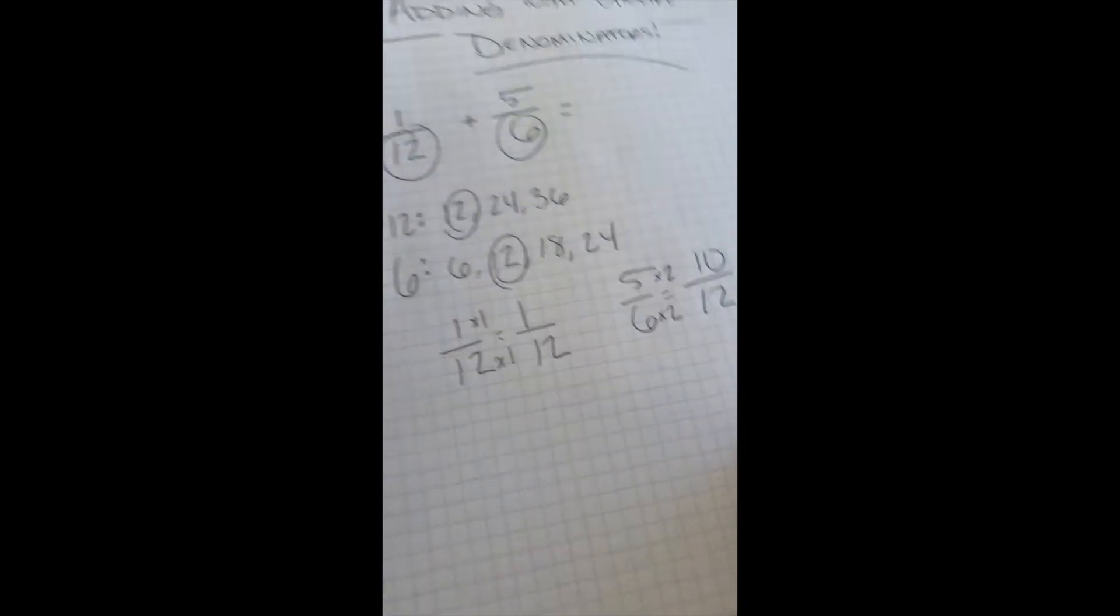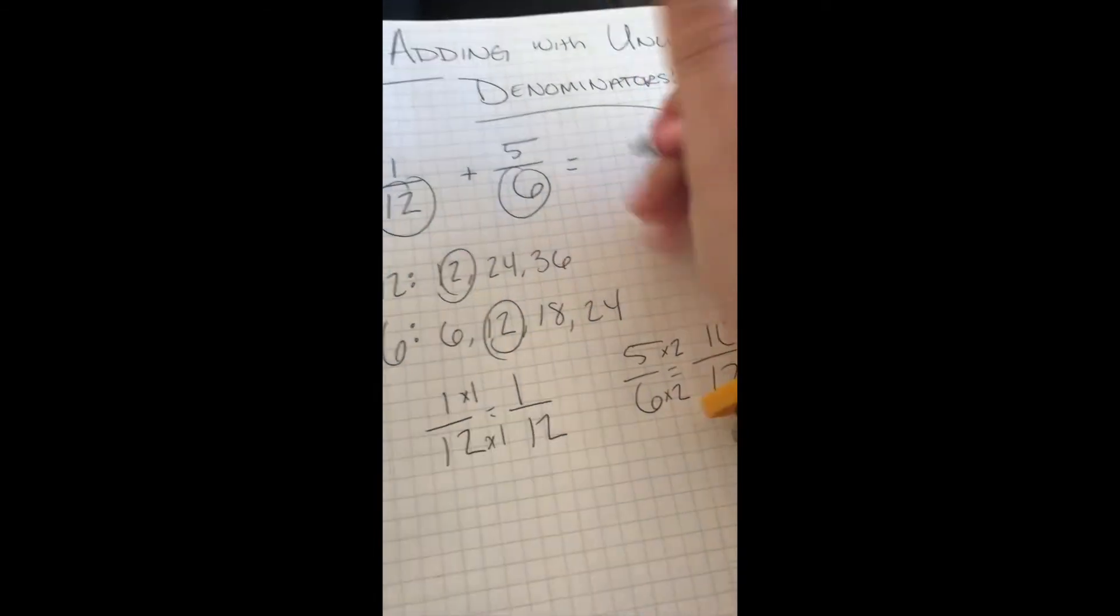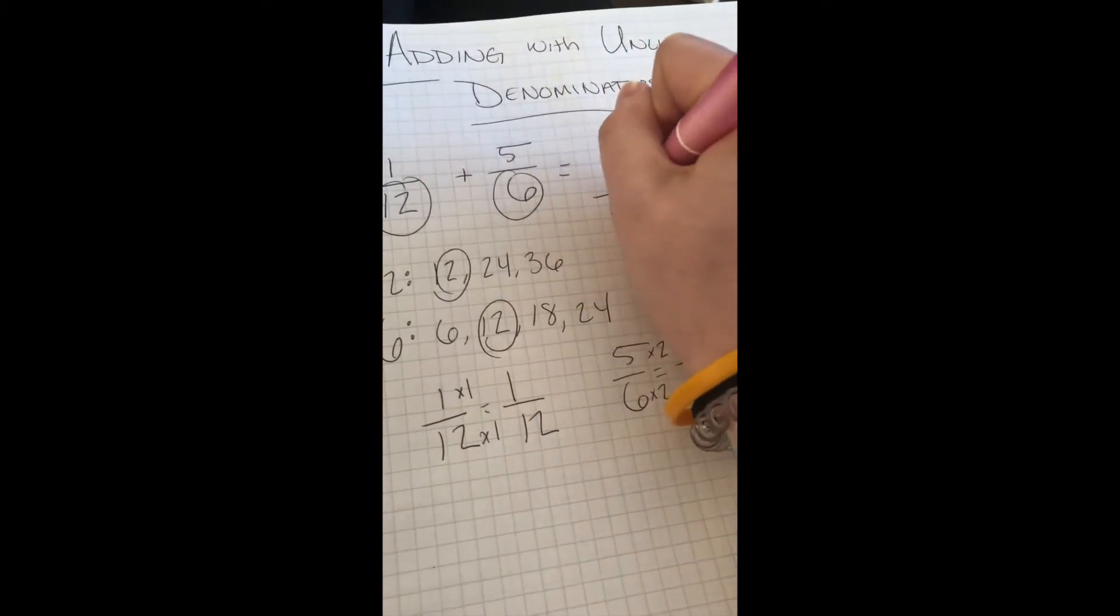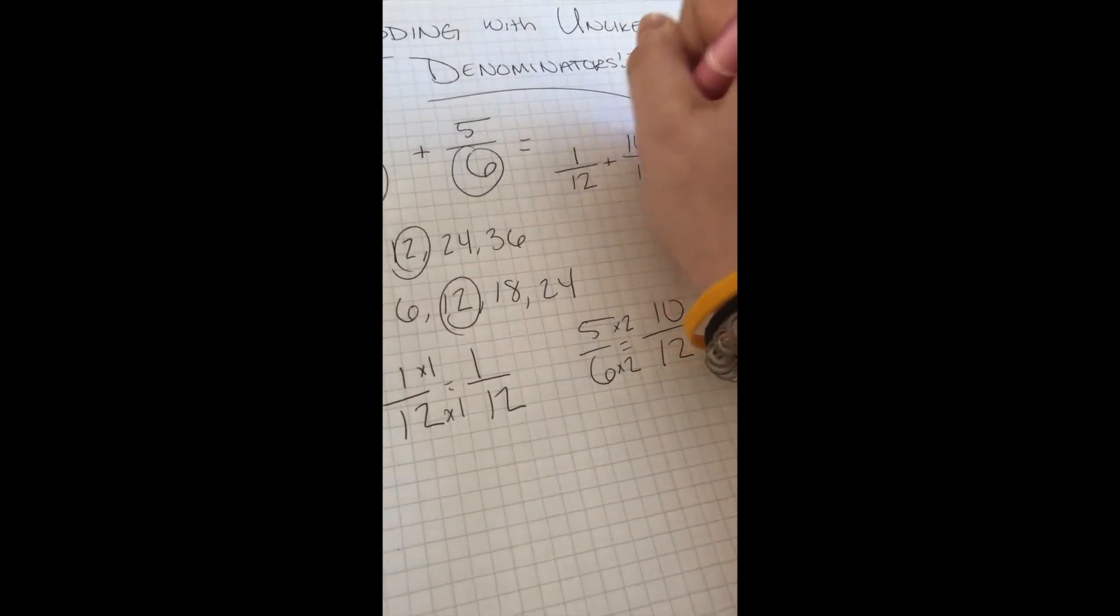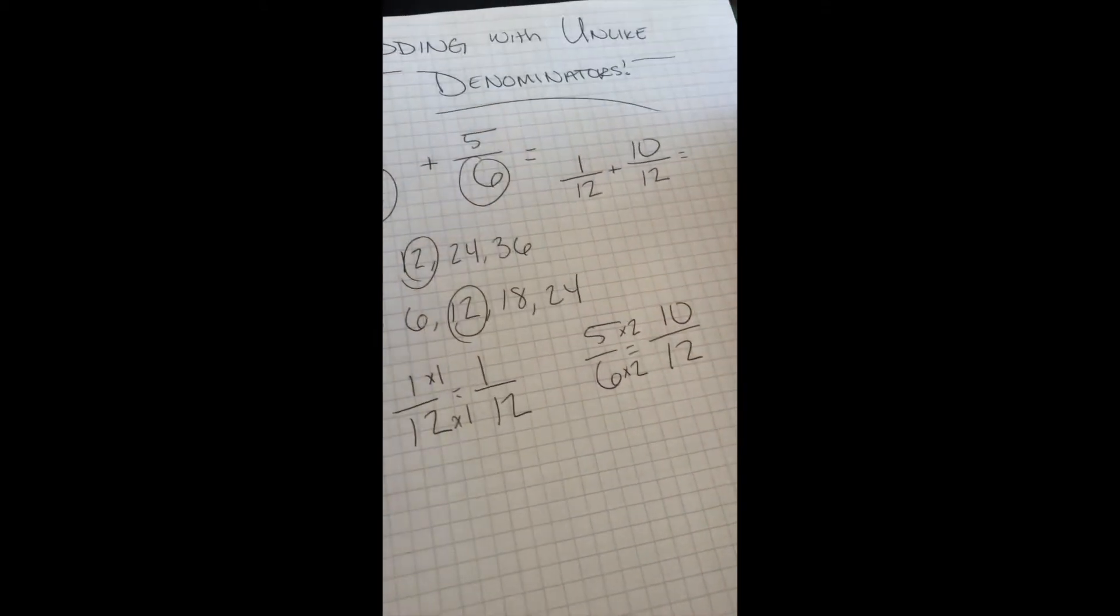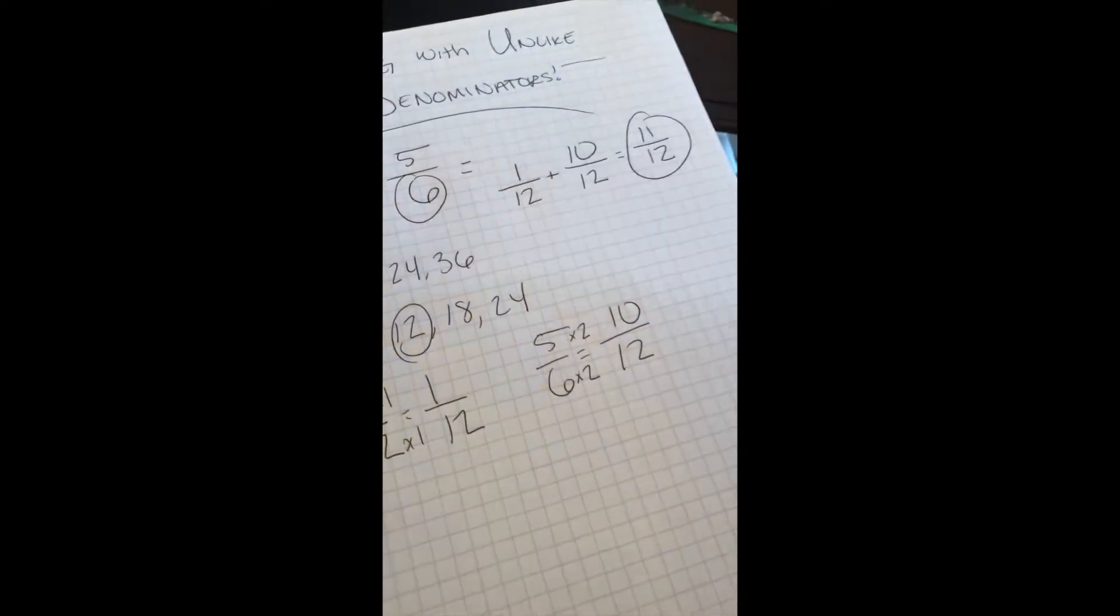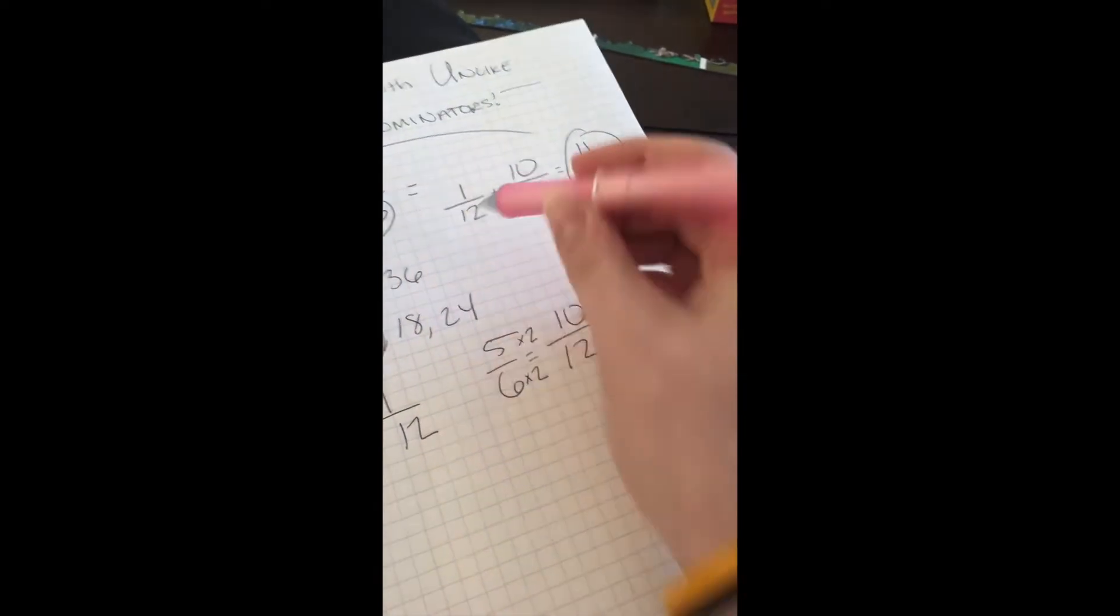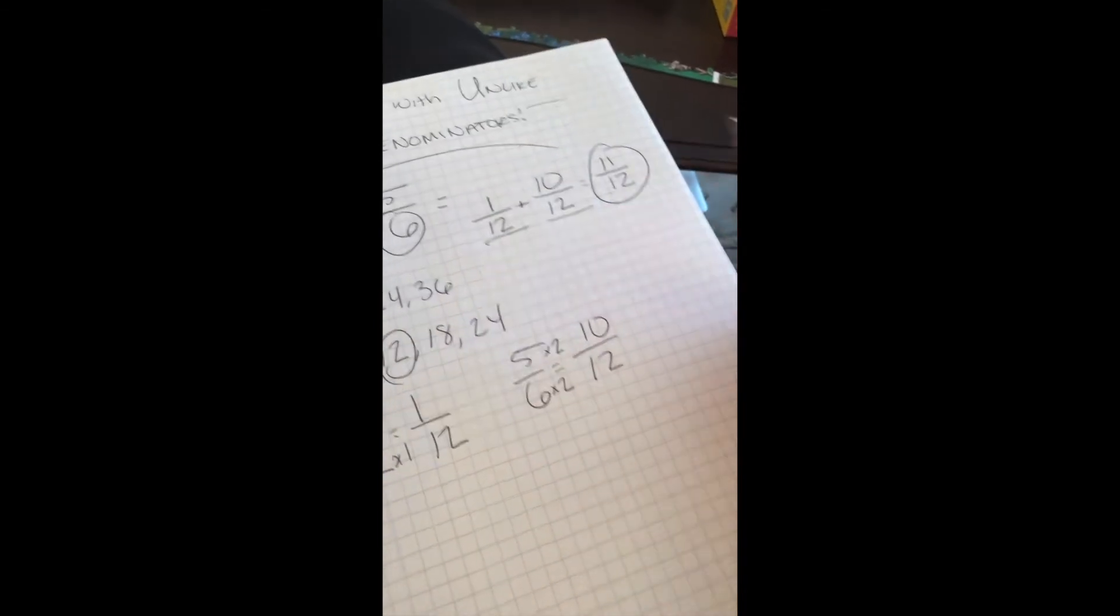So really, when you do this problem, you've now changed it. So 1 twelfth plus 5 sixths, you've changed it to be 1 twelfth plus 10 twelfths. And then once you've added those together, that gets you 11 twelfths, because now that the denominators are the same, you just add the numerator together, and the denominator doesn't change.